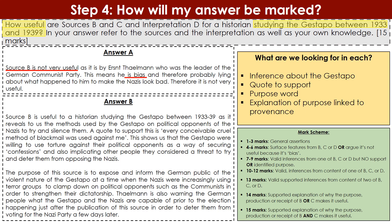Answer B, on the other hand: 'Source B is useful to a historian studying the Gestapo between 1933 and 1939 as it reveals to us the methods used by the Gestapo on political opponents of the Nazis to try and silence them.' That's the inference — it's telling us how the Gestapo tried to silence political opponents. They back it up with a quote: 'Every conceivable cruel method of blackmail was used against me.' That quote matches the inference. They then expand: 'It shows that the Gestapo were willing to use torture against their opponents as a way of securing confessions and implicating others they considered a threat, to deter them from opposing the Nazis.' With one supported inference from source B, we're at around 10 marks at this point.